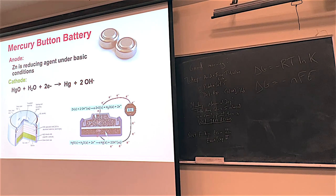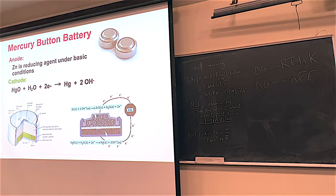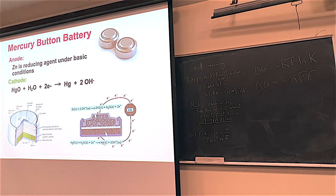A mercury battery is similar to an alkaline battery. Zinc is oxidized to form zinc oxide, while mercury 2 oxide is reduced to form liquid mercury. Hydroxide ions are transported from cathode to anode. These create both mercury and base, which is not good for the environment. Don't throw them on the ground.